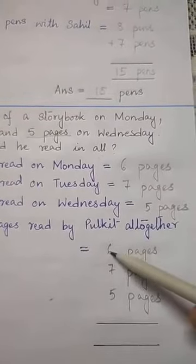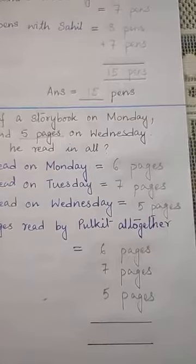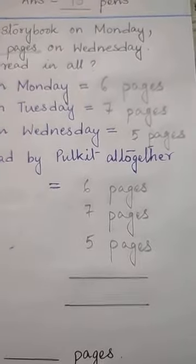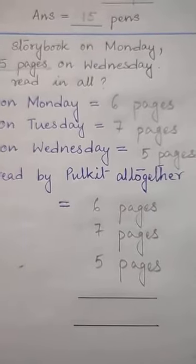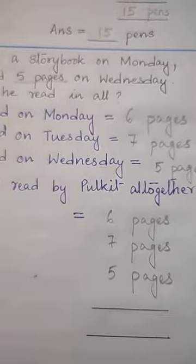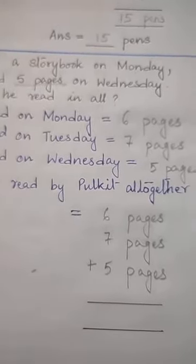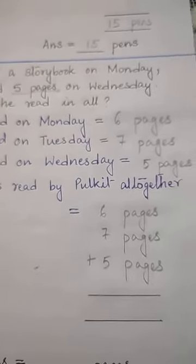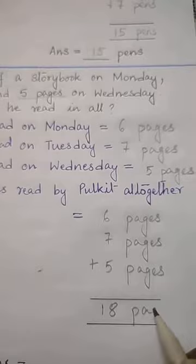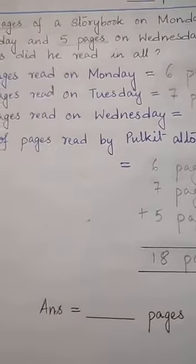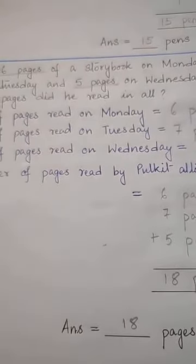First you will add 6 and 7. How much is 6 plus 7? 6 plus 7 is 13. Then again 13 plus 5 — how much is it? 13 plus 5 is 18. So you will write 18. It is 18 pages. Therefore your answer will be 18 pages. We are done with number D.